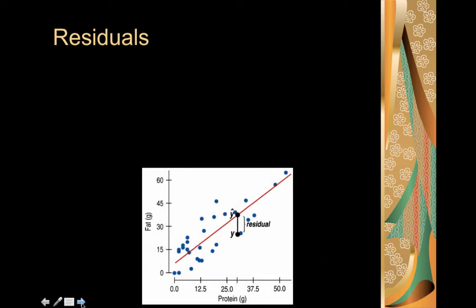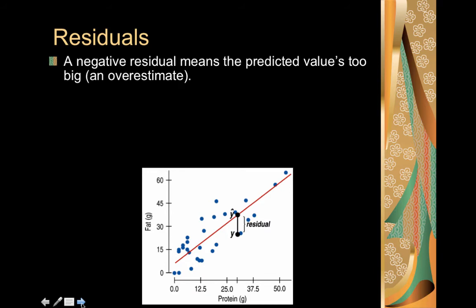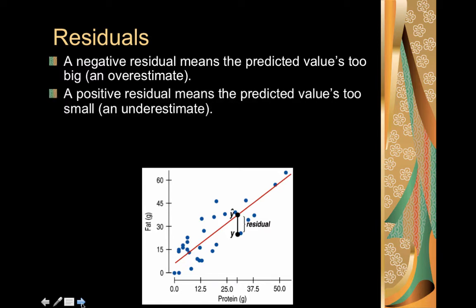Continuing to look at residuals, a negative residual means the predicted value is too big, so it's an overestimate because your data value is below the line. A positive residual means that the predicted value is too small, it's an underestimate because your data value is above the line.